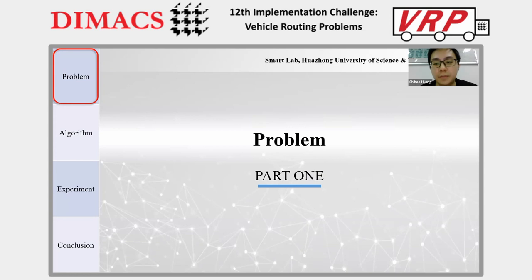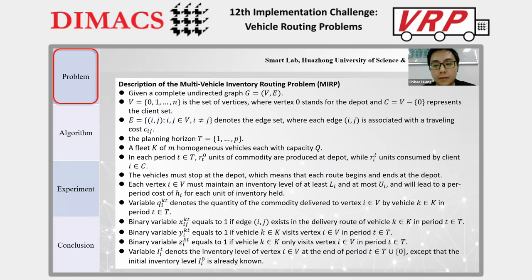Variable q_ikt denotes the quality of the commodity delivered to vertex i by vehicle k in period t. Variable x_ijkt equals 1 if edge ij exists in the delivery route of vehicle k in period t. Binary variable y_ikt equals 1 if vehicle k visits vertex i in period t. Binary variable z_ikt equals 1 if vehicle k only visits vertex i in period t. Variable I_it denotes the inventory level of vertex i at the end of period t, except that the initial inventory level I_i0 is already known.